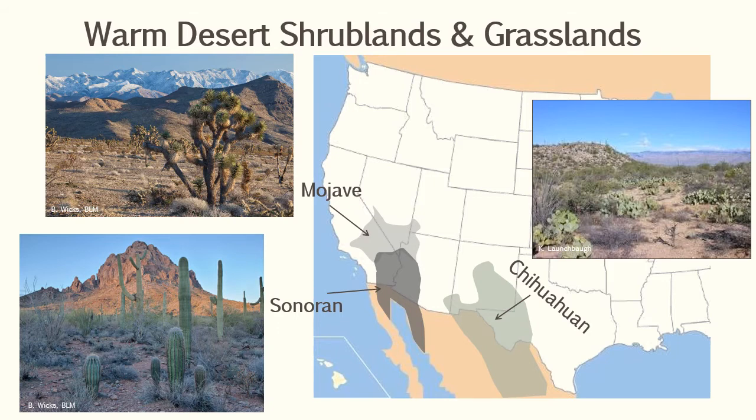There are three main kinds of deserts when talking about the southwest warm deserts: the Mojave, located in southern Utah, parts of Nevada and California, at the border with Arizona; the Sonoran Desert, the classic desert in southwestern Arizona and southern California; and much of Texas and New Mexico falls within the Chihuahuan Desert. So again — three kinds: Mojave, Sonoran, Chihuahuan.